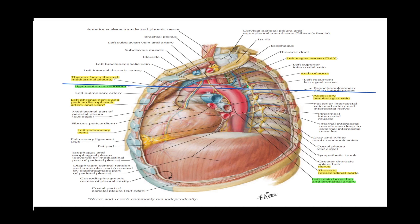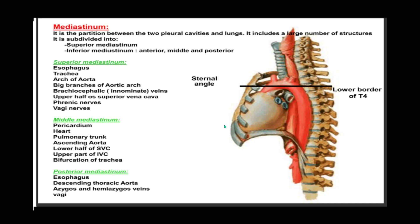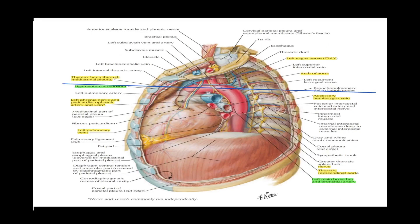Clinically, in the posterior mediastinum you can have ganglionomas or neuromas along the sympathetic chain. In the anterior mediastinum you can have a thymic tumor such as a lymphoma of the thymus, and also ectopic thyroid tissue. These images help us quickly revise how the mediastinum is compartmentalized into the superior aspect and the inferior aspect, with the inferior mediastinum further divided into the anterior, middle, and posterior mediastinum.